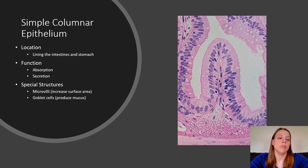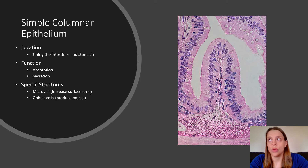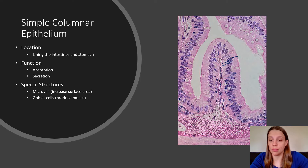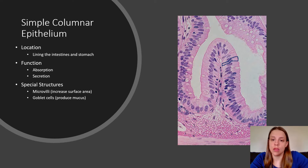Next we have simple columnar epithelium. You find it in the lining of your intestines and stomach, and we use it for absorption or secretion. A lot of students get confused between the nucleus and the whole cell. The nucleus is just that big purple dot inside the cell — the whole cell is what I've drawn my little box around. The name columnar comes from the shape of the whole cell.